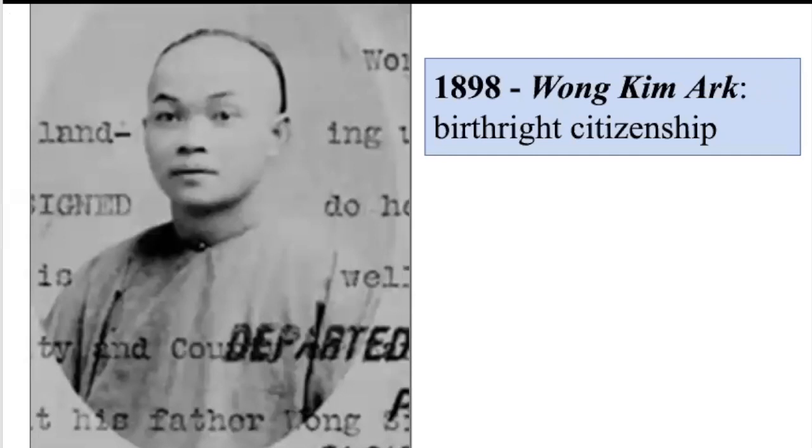This next case is a bit more heartening: 1898, Wong Kim Ark. In 1898, the Supreme Court affirmed the principle that children born on American soil are U.S. citizens, regardless of their parents' status, and that this applied to a broader group than people with African descent. Wong Kim Ark was born in San Francisco to Chinese parents, and by this time, anyone from China was prohibited by law from becoming a U.S. citizen. So Wong Kim Ark's parents were permanently non-citizens, but he was born in the U.S. The court ruled that birth in the U.S. outweighed other factors such as parent status and conferred citizenship.